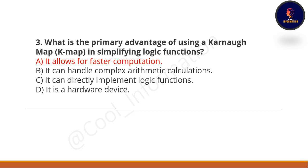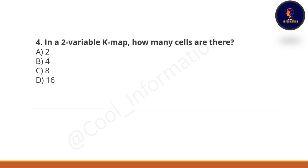Next question: In a two-variable K-map, how many cells are there? Is it 2, 4, 8, or 16? The correct option is option number B, which is 4.